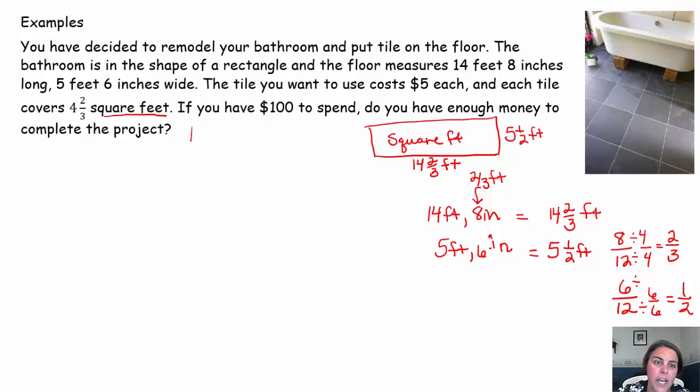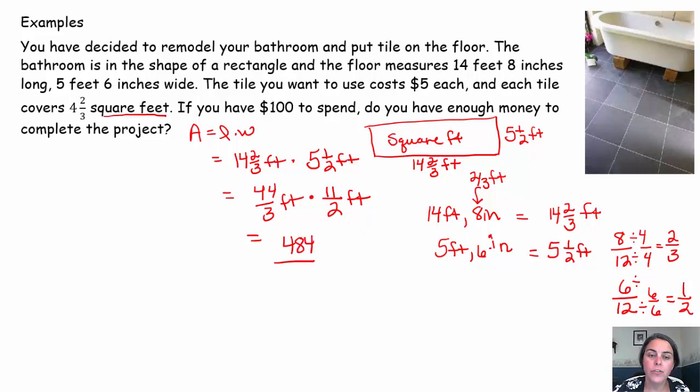I need to know how many square feet. That means I have to find my area. Area is length times width. So length is 14 and 2/3 feet times width is 5 and 1/2 feet. In order to multiply these, we're going to want to write them as improper. 14 times 3 is 42 and 2 more is 44. So this is 44 thirds feet times 2 times 5 is 10 and 1 is 11 halves feet. 44 times 11 is actually 484. 3 times 2 is 6. Feet times feet is feet squared. That's why area is measured in square feet because feet times feet is feet squared.